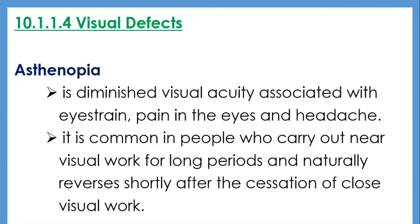These defects can be corrected using appropriate lenses. Myopic individuals can be given diverging lenses to reduce total refractive power, while hypermetropic individuals can be given converging lenses to increase their refractive power. Several problems may occur if defective vision is not corrected: suboptimal vision may degrade performance; excessive load on the muscles of the refractive system may cause visual fatigue; and the worker may adopt stressful body postures.